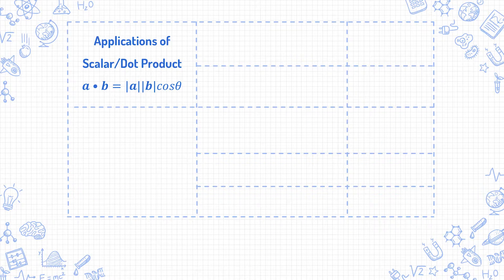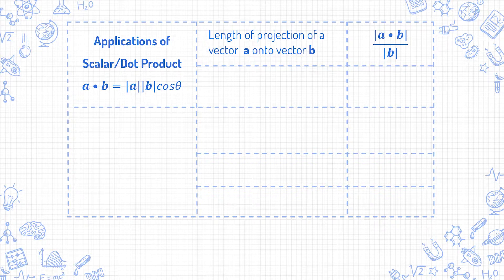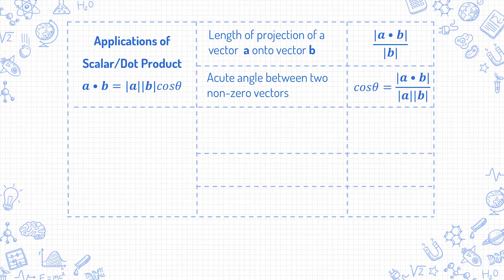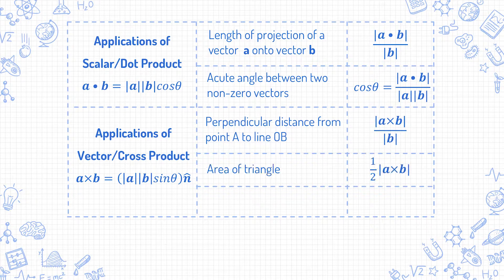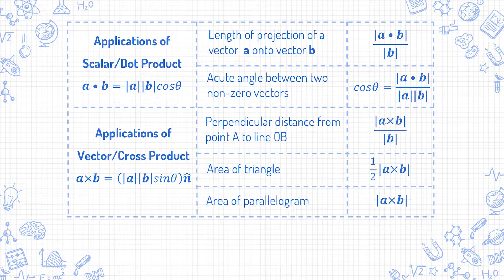In today's video, I'm going to cover applications of the dot product, which includes length of projection and the acute angle between two non-zero vectors, and applications of the cross product, which includes the perpendicular distance, area of triangle, and area of parallelogram.